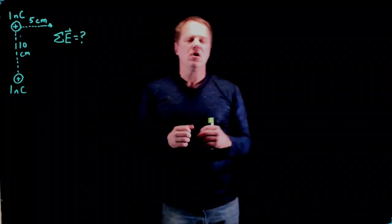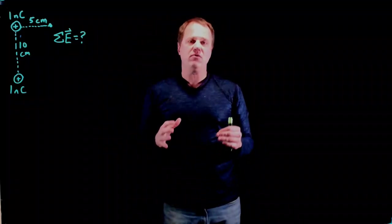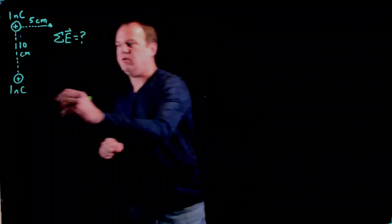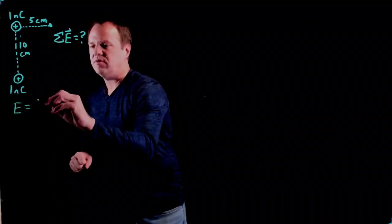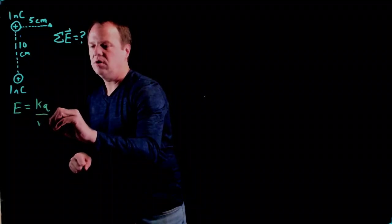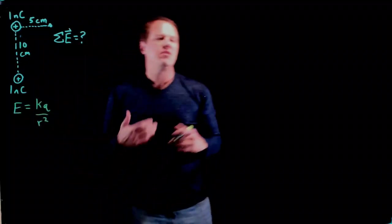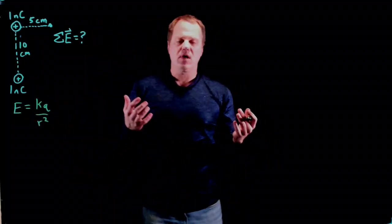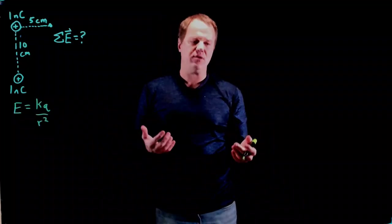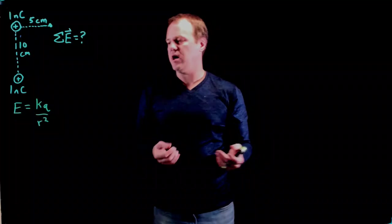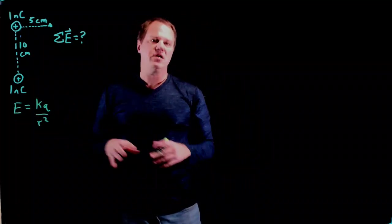We have a formula for the magnitude of the electric field due to a point charge, and it looks like this. It is electric field, we use the symbol E for that, is kq over r squared. The k is a constant, it's 8.99 times 10 to the ninth newton meter squared per coulomb squared. q is the magnitude of the charge, and r is the distance.